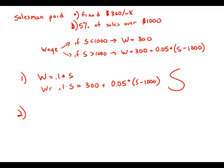Statement number two tells us quite simply his sales are $5,000. Well, if we know the sales, then we can plug into this equation and we can figure out the wage. We don't actually have to go through the steps to do that — it's enough to know that we could do that. This statement supplies sufficient information to answer the question.